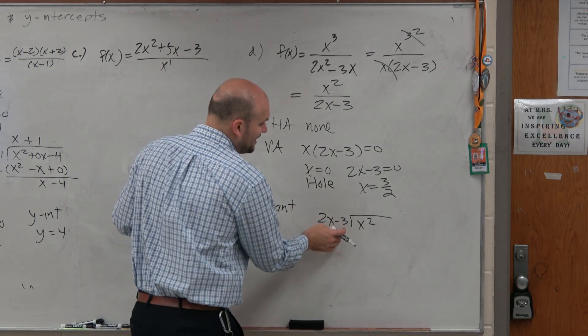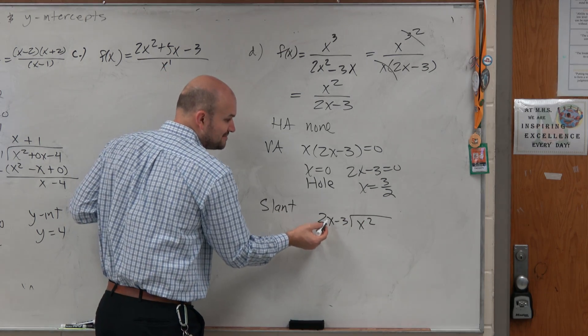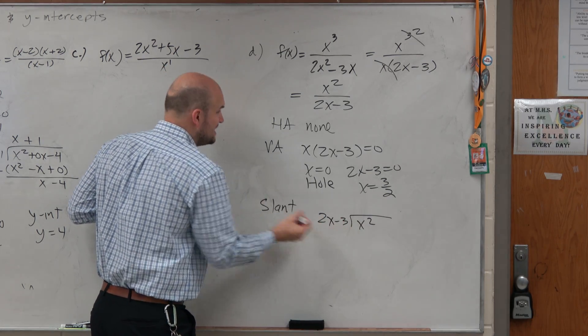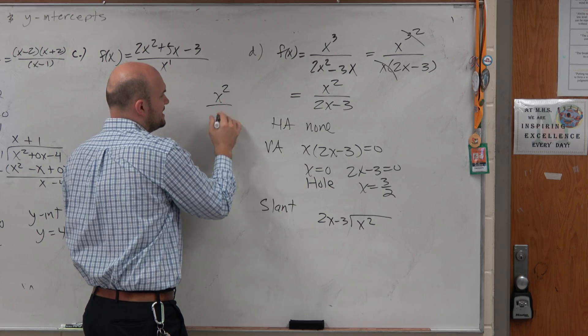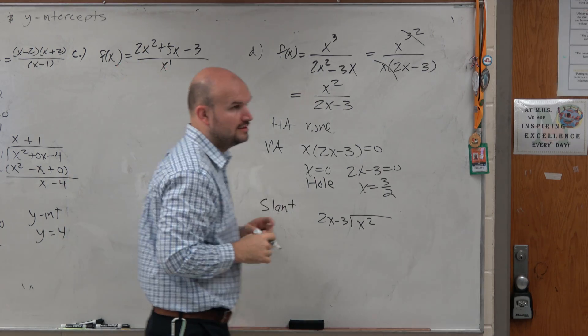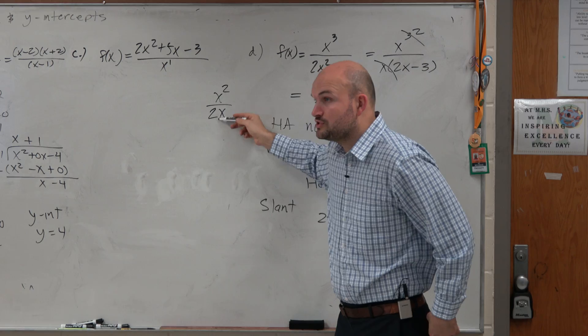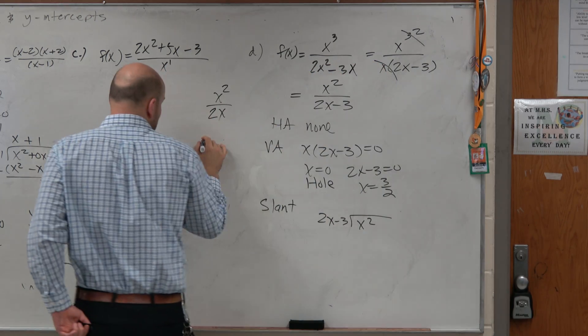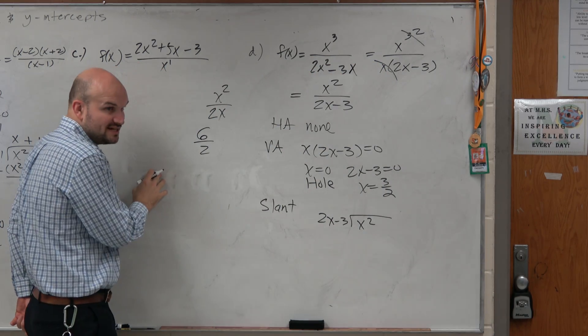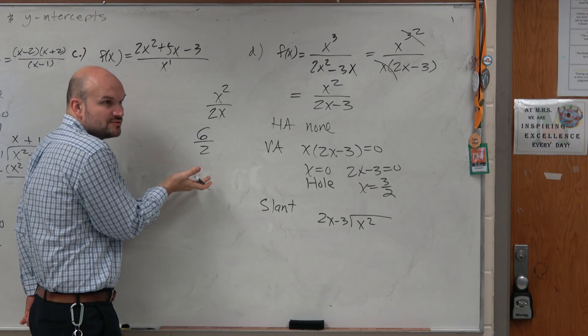So if you guys remember, when I taught long division, I said if you don't understand how to go from how many times 2x, like this term, divides into that term, write it as a fraction. OK, because isn't this the same thing? How many times does 2x divide into x squared? How many times does 2 divide into 6, right? It's saying the same thing. It's just written in a different form.